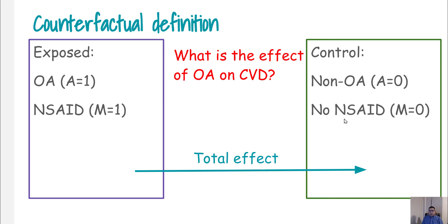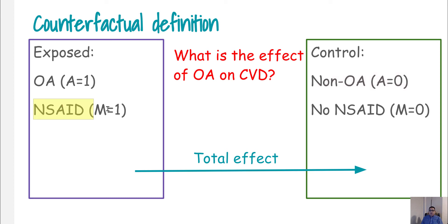So what is this modern approach we are talking about? Basically, we are talking about the counterfactual definition. In this counterfactual definition, if you remember from our previous lab, we are comparing the exposure group versus the control group — that was the situation under which we were estimating the total effect. But under mediation, we have another form of exposure, so there are at least two variables impacting our outcome.